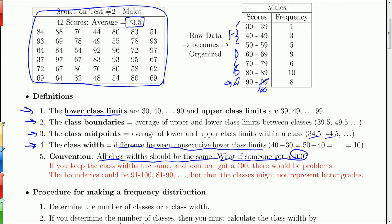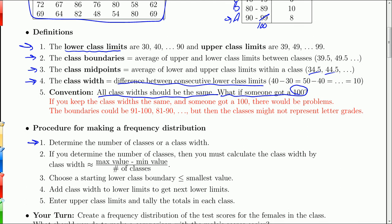The procedure for making a frequency distribution: you want to determine the number of classes, or you can determine the class width — either way you've got to start with one of those two things. If you start with class width, you don't want more than about 10 to 20 classes, because once you get to 20 classes your brain has trouble comprehending it. You want the number of classes to be between about 5 and 15 or 20. If you determine the number of classes first, then you calculate the class width as the maximum minus the minimum value divided by the number of classes.